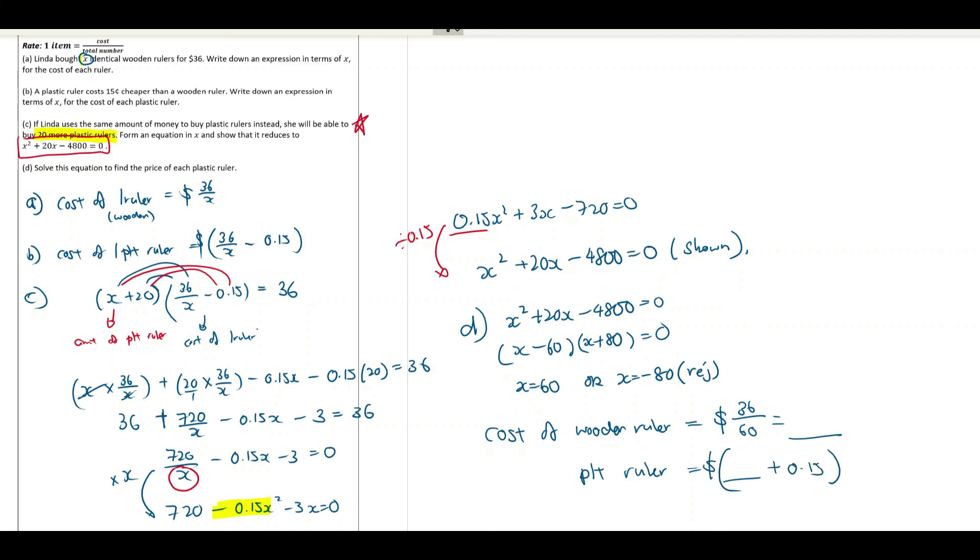And the cost of one plastic ruler that will be equal to this amount plus 0.15. 36 over 60 will give you 0.60. Oh sorry, it's less. The plastic ruler cost less. Minus 0.15 and that will be 45 cents.